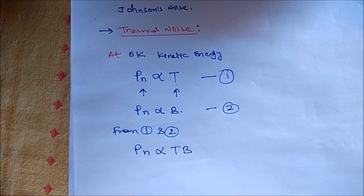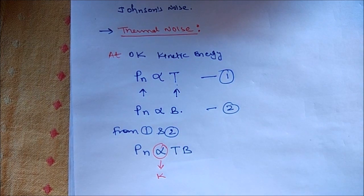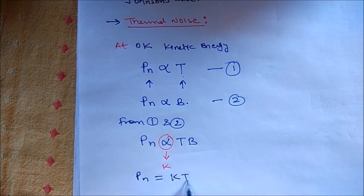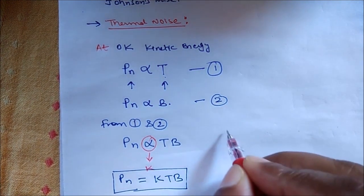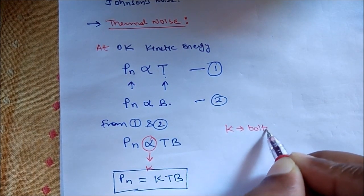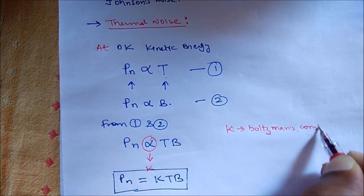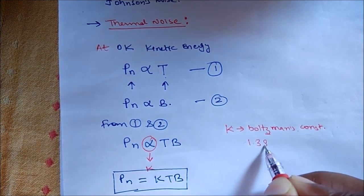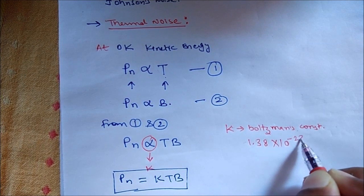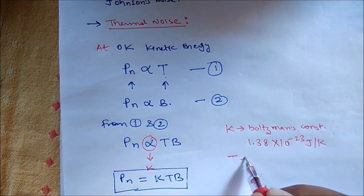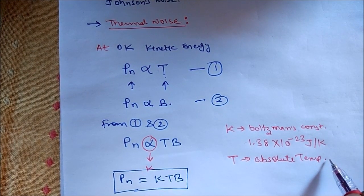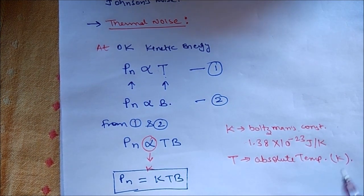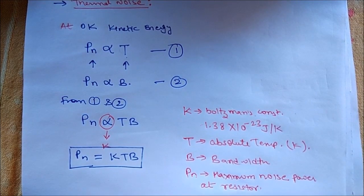Combining equation one and equation two, noise power is directly proportional to both temperature and bandwidth. Adding a constant of proportionality K, the noise power formula is given as Pn = KTB. Here K is Boltzmann's constant with value 1.38 × 10⁻²³ joules per Kelvin, T is the absolute temperature in Kelvin, B is bandwidth, and Pn is the noise power at a resistor.